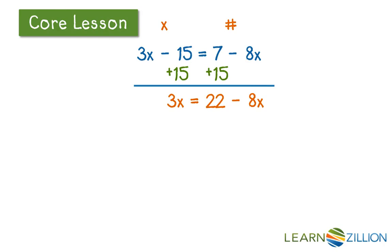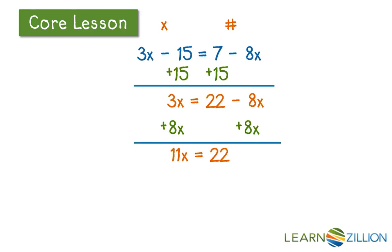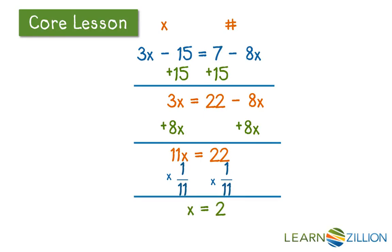Now on the left side we only have x terms, but on the right side we want only numbers. So we need to get rid of that minus 8x by adding 8x to both sides, because they are additive inverses of each other. Once we do that, we are left with 11x on the left side and 22 on the right side. Now we need to get rid of the coefficient of 11 on the left side, so we multiply both sides by 1/11 because 11 and 1/11 are multiplicative inverses. On the left side we are just left with x, and on the right side 22 times 1/11 is 2.